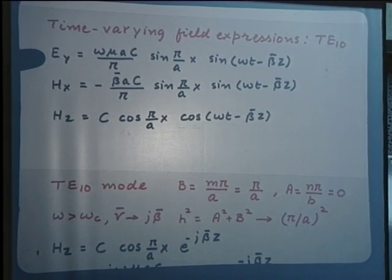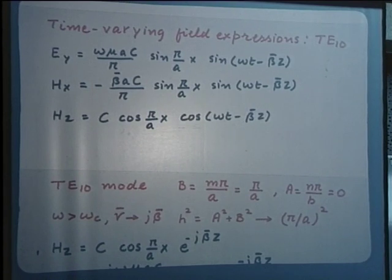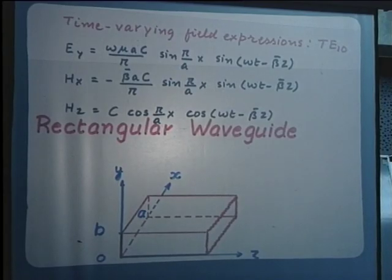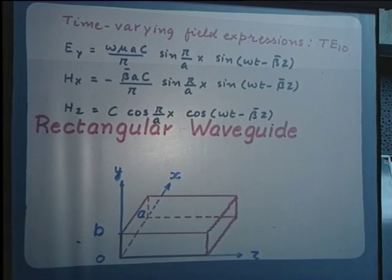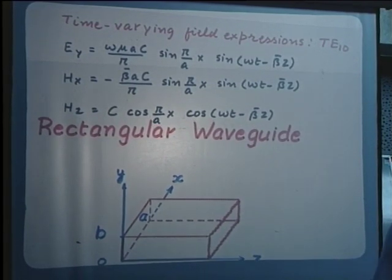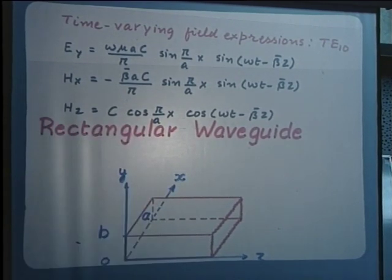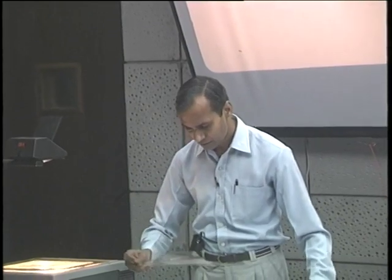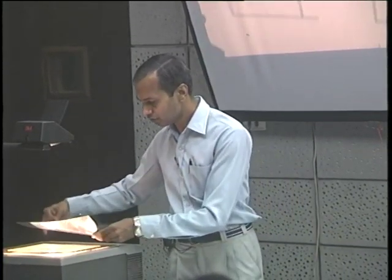We have one electric field component oriented along the y direction — the shorter dimension of the waveguide. The magnetic field has two components: one along the x direction and the other along the z direction, entirely in the xz plane. We can use the method used earlier for the parallel plane guide for displaying these field components.